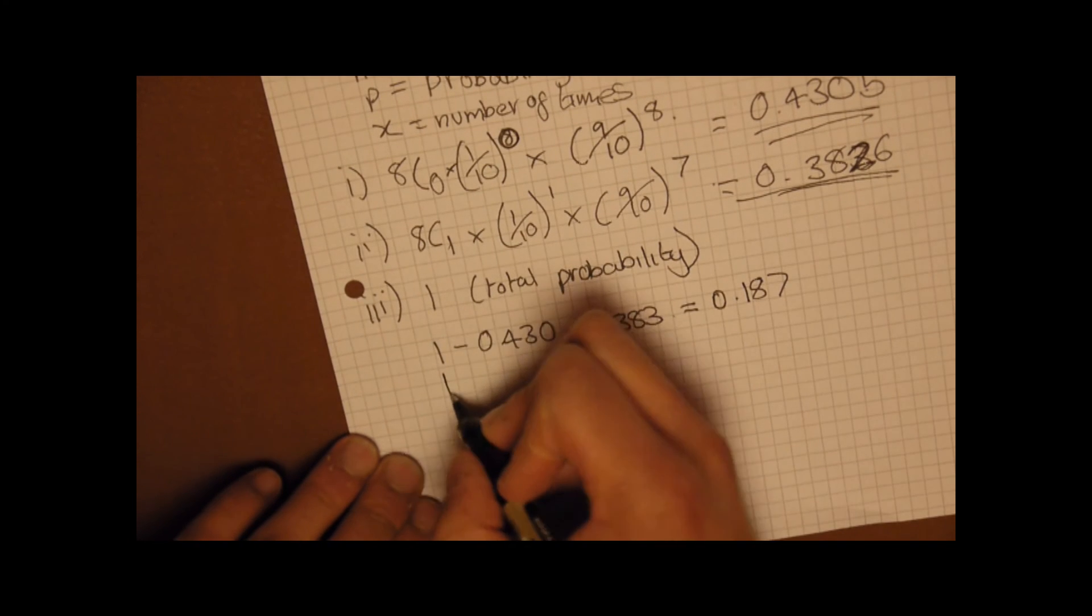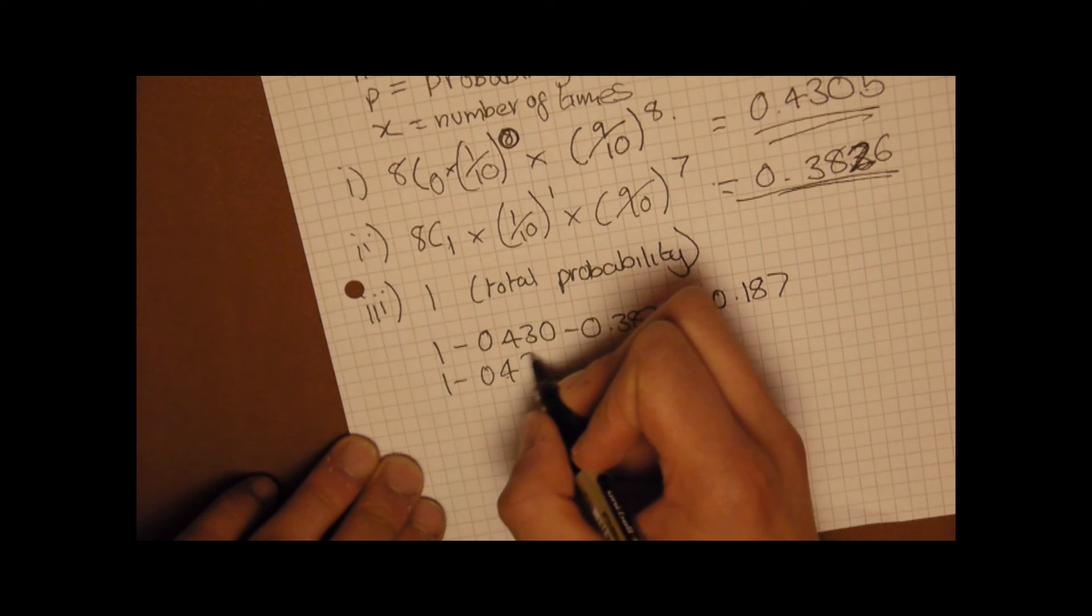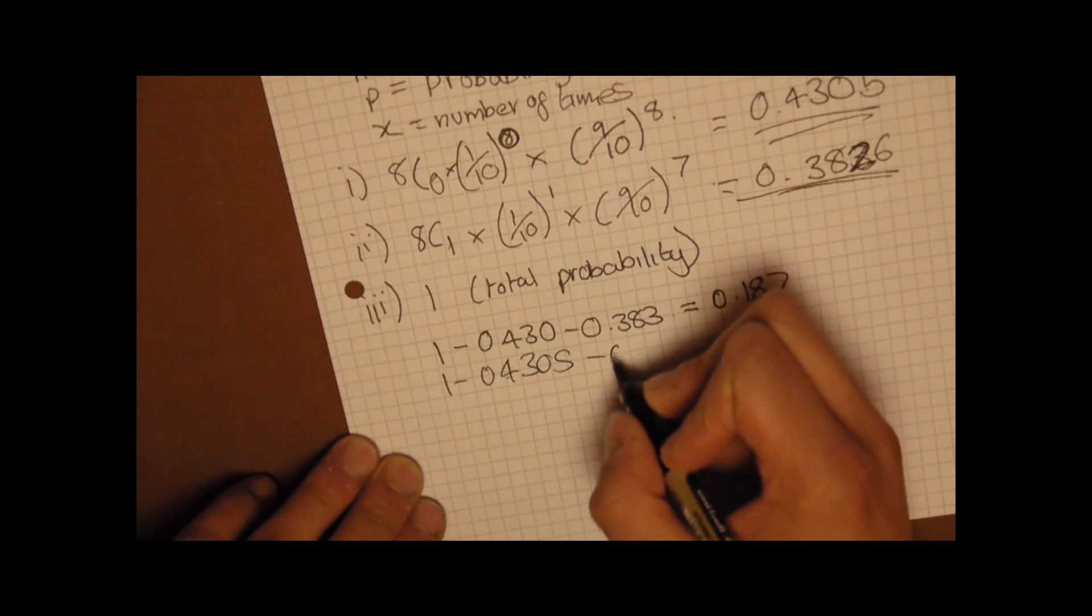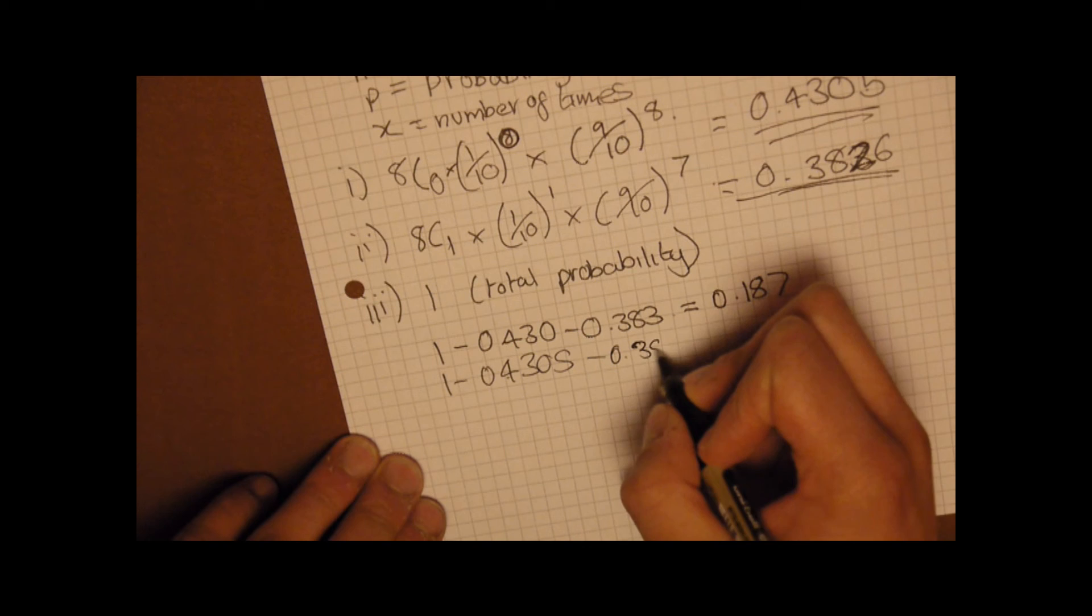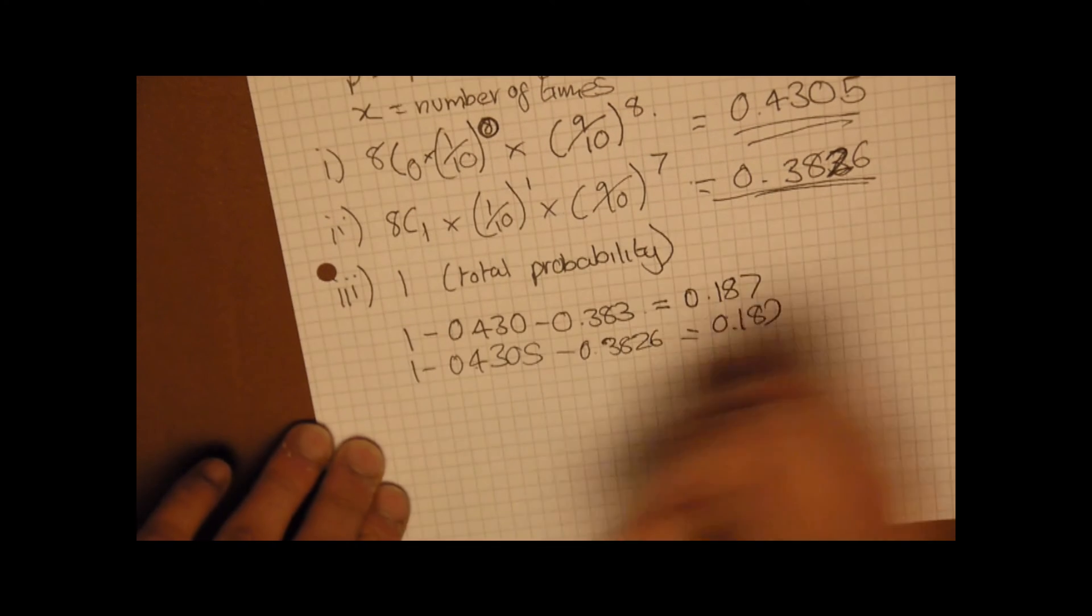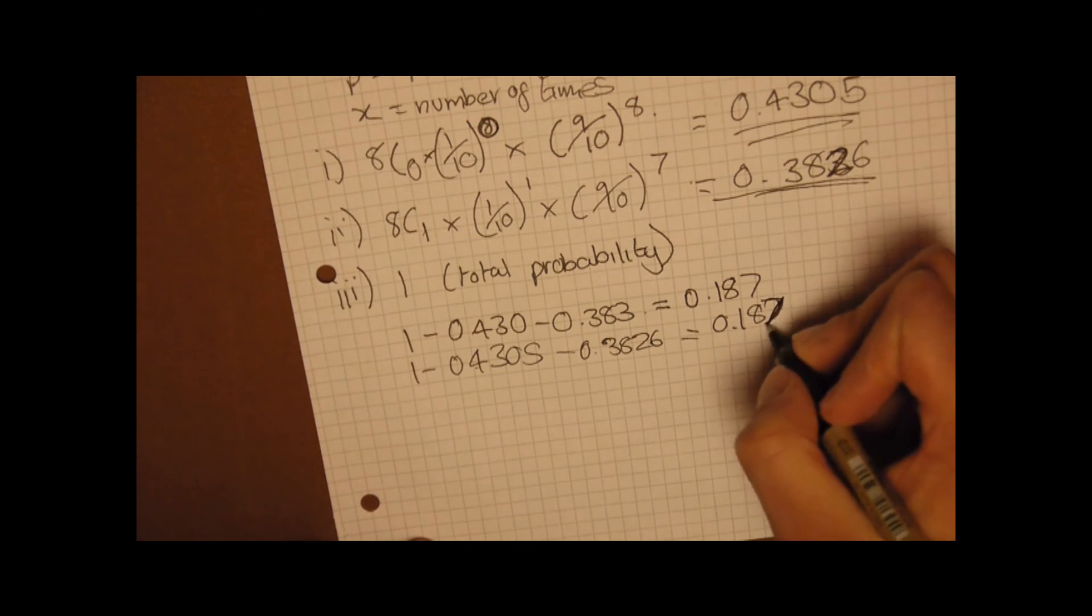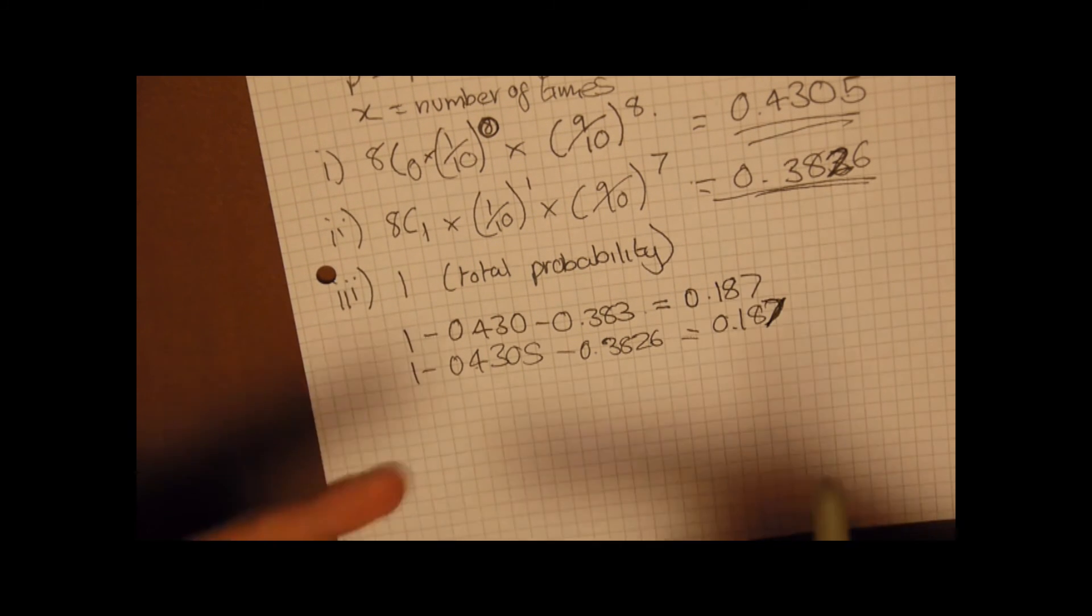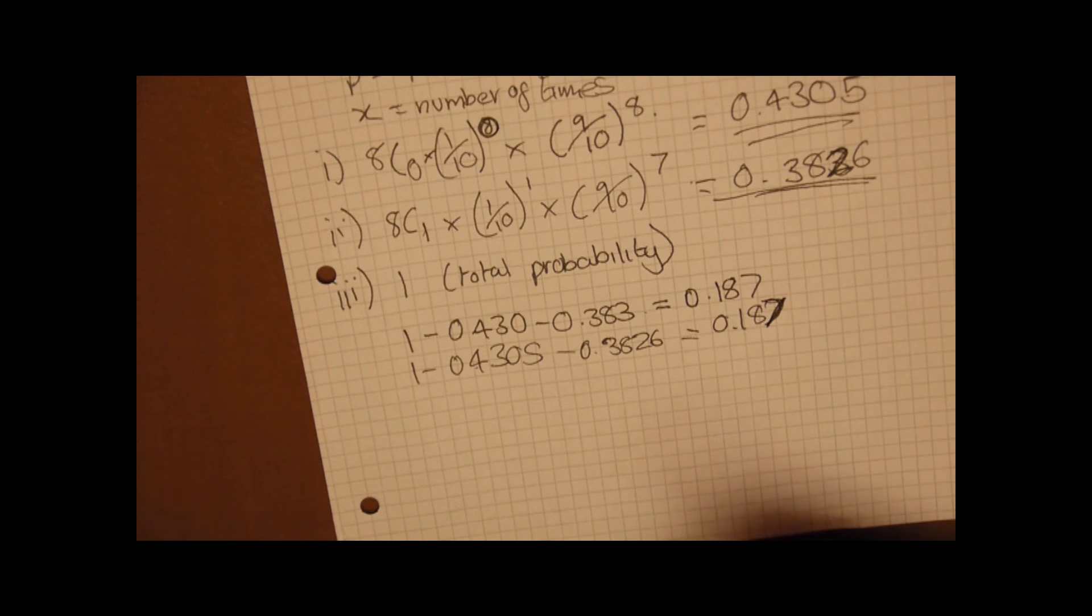So if we were to write this again to 4 decimal places it would be 0.4305 minus 0.3826 equals 0.187. Either should be fine, but remember to round correctly: above 5 then you go to the next one, below 5 you round down. Provided you remember that, then your answer should always be fine.